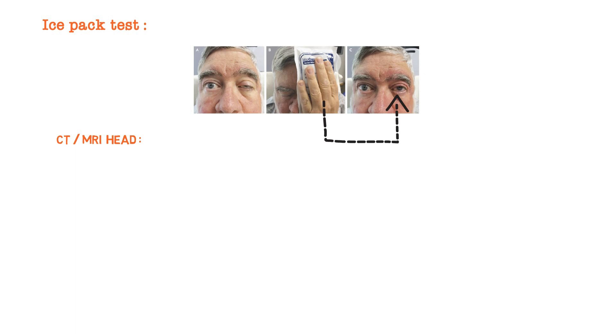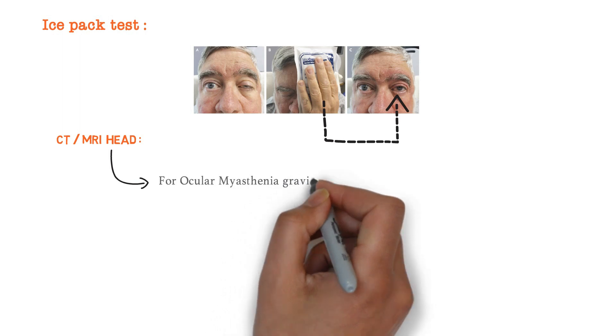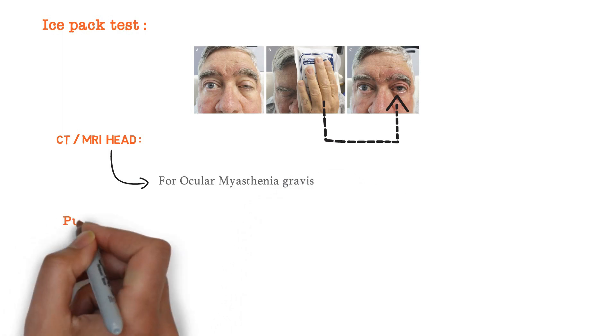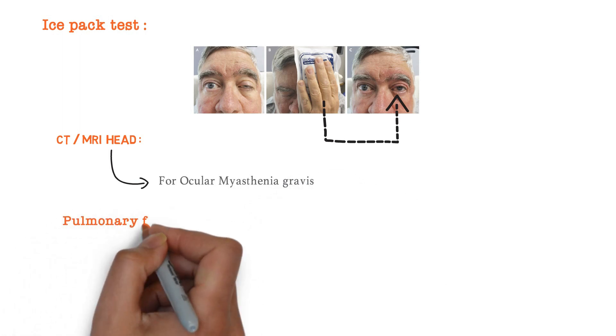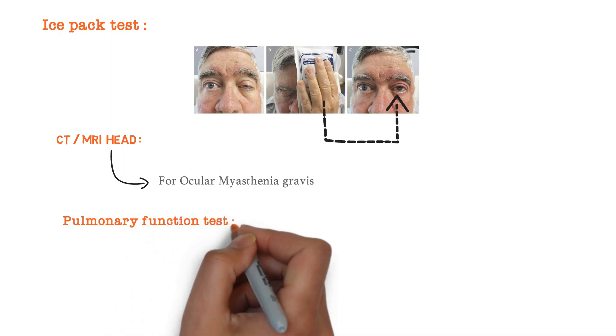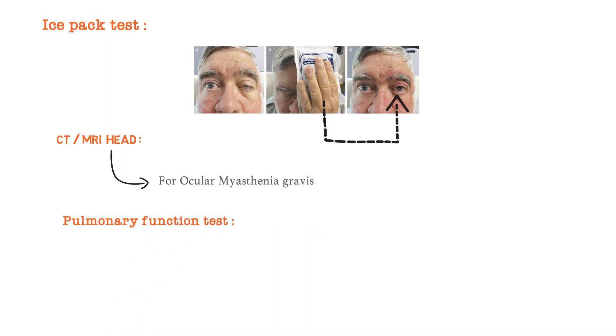We can also do CT or MRI of the head for ocular myasthenia gravis and to rule out arteriovenous malformation. We can also test pulmonary function to plan thymectomy and to evaluate lung function. Now let's talk about the management of this disease.